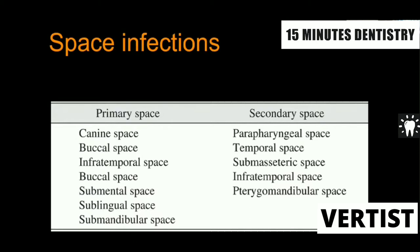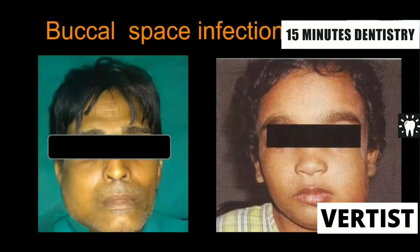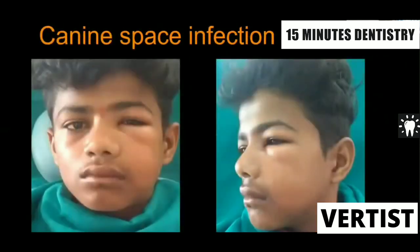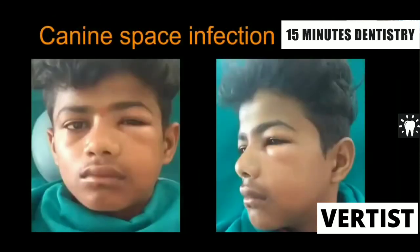Depending on which tooth is involved, various spaces will be affected. For example, this is the canine space involvement — you can see all the signs of involvement in the region. The lower eyelid is also involved. You can see the extraoral swelling, the tenseness of the extraoral swelling, and the erythema of that region. This is a canine space infection.